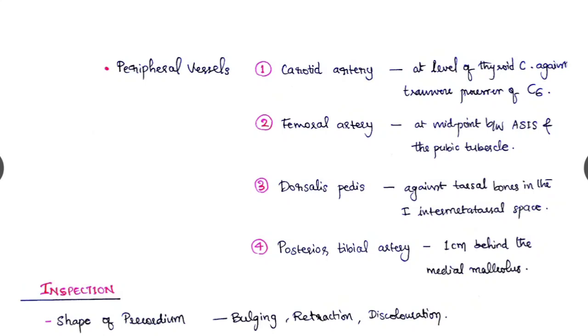The carotid artery we can palpate at the level of the thyroid cartilage against the transverse processes of the C6 vertebra. The femoral artery at the midpoint between anterior superior iliac spine and the pubic tubercle. Dorsalis pedis we have to palpate against the tarsal bones in the first intermetatarsal space, and the posterior tibial artery, it is around one centimeter behind the medial malleolus of the leg.